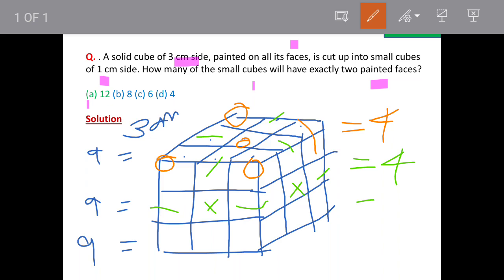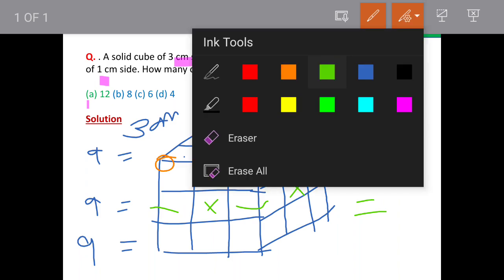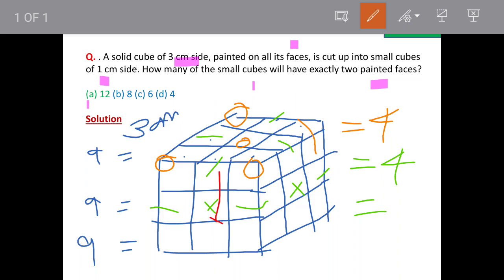And then when we come to last row, it will replicate the same as the top row. Whatever position is there on top, same will get replicated on the bottom also. This will also have total 4 cubes which will be having 2 faces painted.